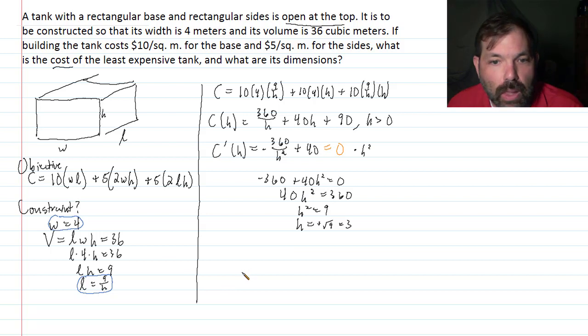Let's use the second derivative test here. I could use the first derivative test to check, but I'm going to use a second derivative test. So the second derivative of C with respect to H would be 720 over H cubed. And notice that that is positive for H positive. So that means, so then H equals 3, since it's a critical number, must be at a minimum.